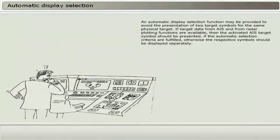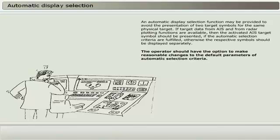An automatic display selection function may be provided to avoid the presentation of two target symbols for the same physical target. If target data from AIS and radar plotting functions are available, then the activated AIS target symbol should be presented if the automatic selection criteria are fulfilled. Otherwise, the respective symbols should be displayed separately. The operator should have the option to make reasonable changes to the default parameters of automatic selection criteria.